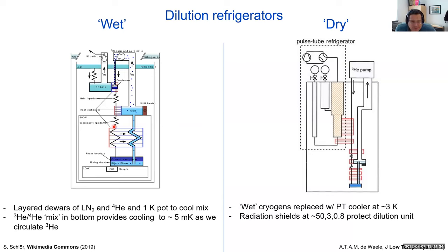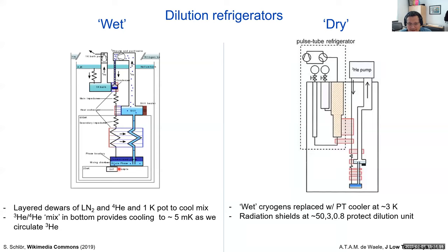Because helium-3 is fantastically expensive, you don't pump it away — you run a closed system, running the same helium-3 round and round in a circle forever. You have to heat this helium-3 up and heat it back down without losing energy, so most of the things you see when looking at a dilution unit are heat exchangers that allow the outgoing liquid or gas to cool the incoming liquid or gas, trying to make the system as efficient as possible.